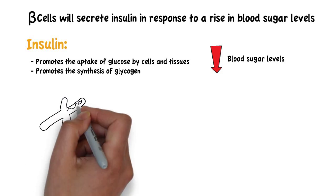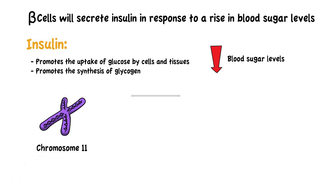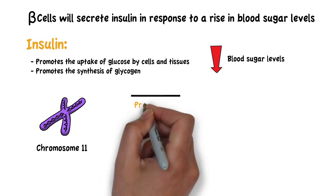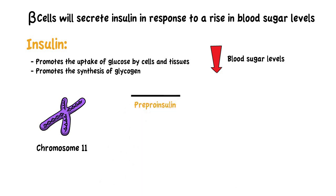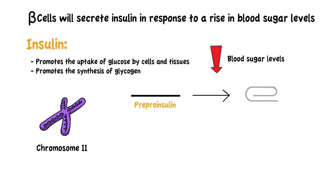Insulin is encoded on chromosome 11 and is firstly transcribed as a polypeptide chain called pre-pro-insulin. Pre-pro-insulin is cleaved, forming pro-insulin as it enters the endoplasmic reticulum.